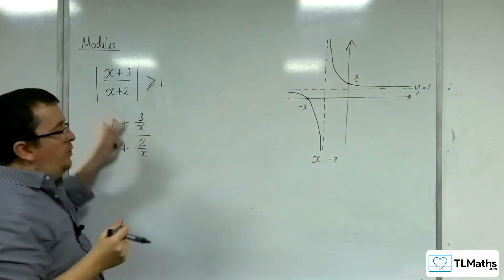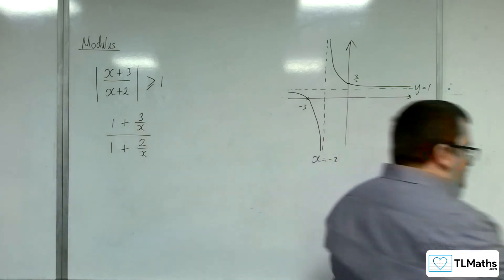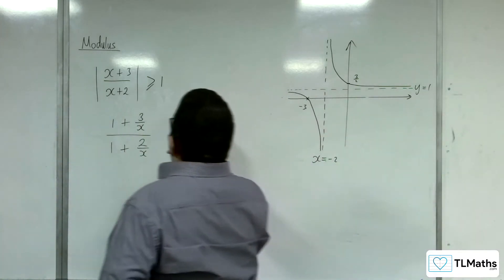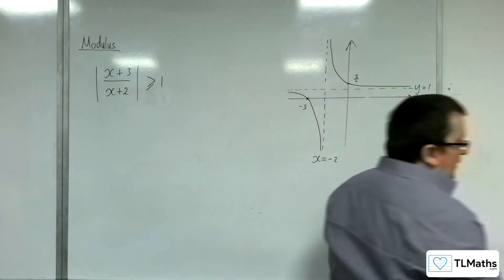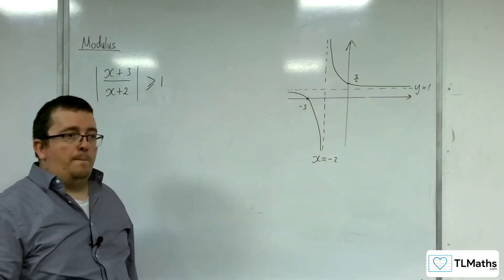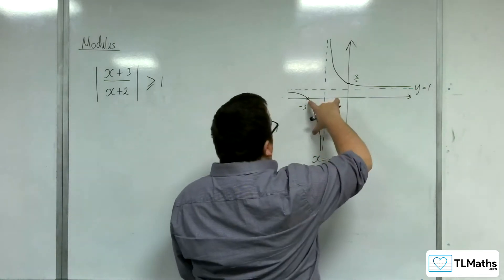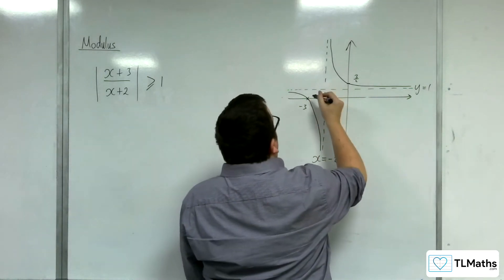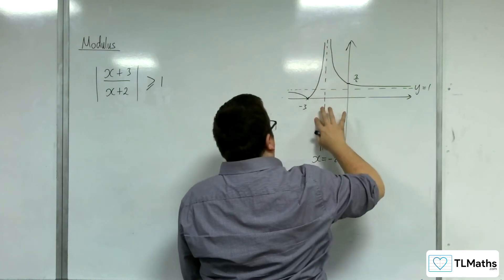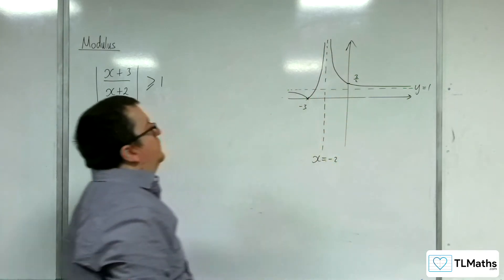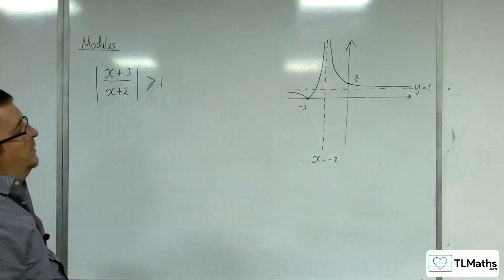Now once we've introduced the modulus, the bottom part—the bit that's below the x-axis—will get reflected up. So this part of the graph here will get reflected up like that. So this is what the curve would look like.